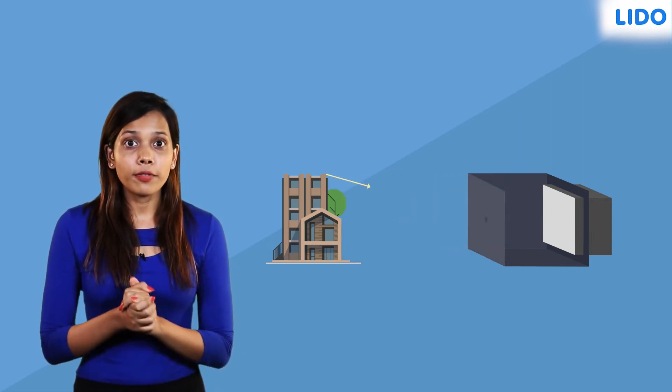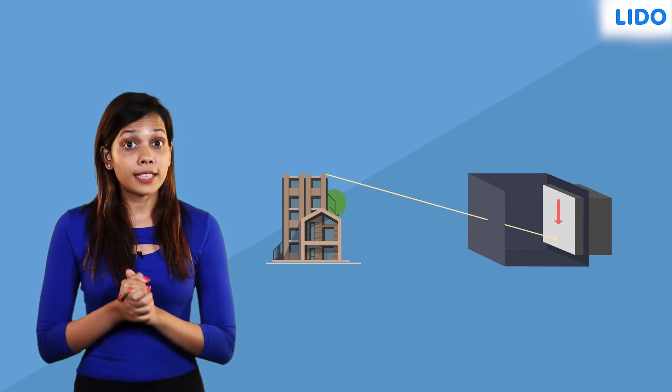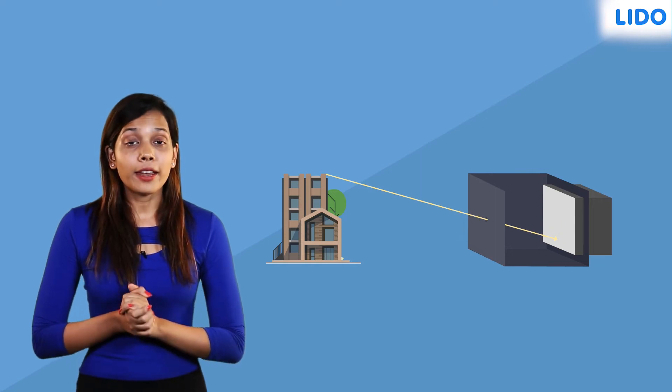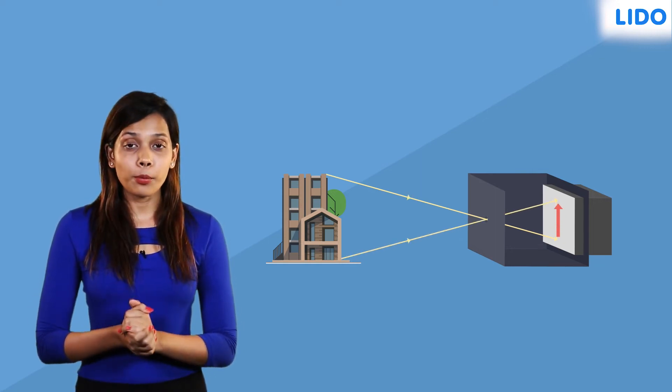So if a ray of light comes from the top of the building to the pinhole, it would have to travel downwards into the hole. And if a ray of light is coming from the bottom of the building, it would have to travel upwards into the hole.